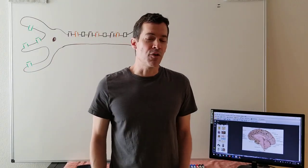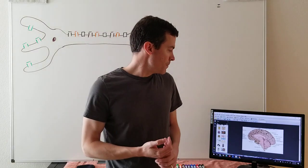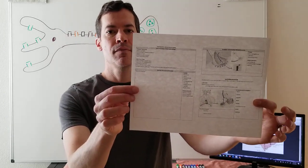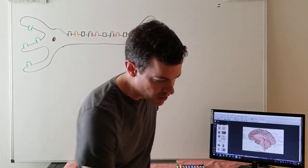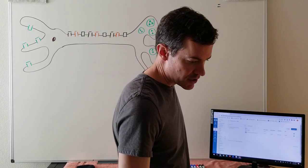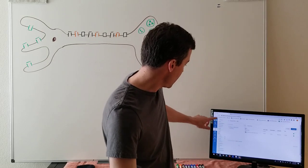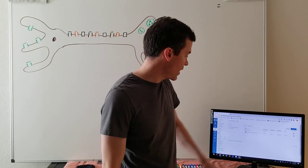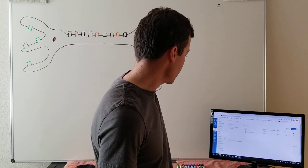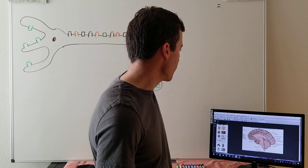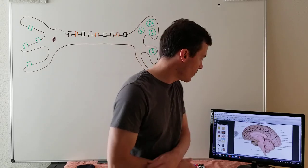Good morning, welcome to nervous system video 2. The notes for this video look like this, and you can find them on Canvas. Go to Canvas, then Files — there's a file on there that says 'Pretty P Bio Notes Body Systems.'